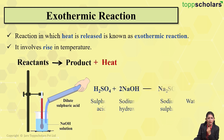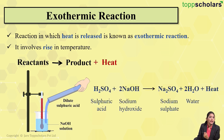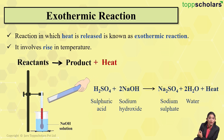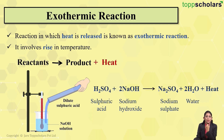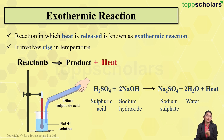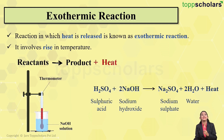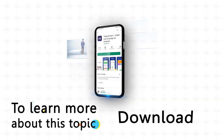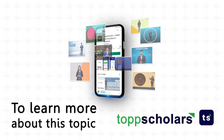Let us write down the reaction. Sulfuric acid reacts with sodium hydroxide resulting in the formation of salt — sodium sulfate — along with water. As we can see, there is plus heat, which means that heat is released in this process. So this reaction is an exothermic reaction. To learn more about this topic, download the Top Scholars app.